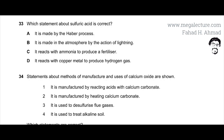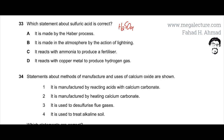The question asks which statement about sulfuric acid, H2SO4, is correct. The first option states it is made by the HABER process. No, it's not made by the HABER process — it's made by the contact process. In the contact process, H2SO4 is made. So option A is incorrect.